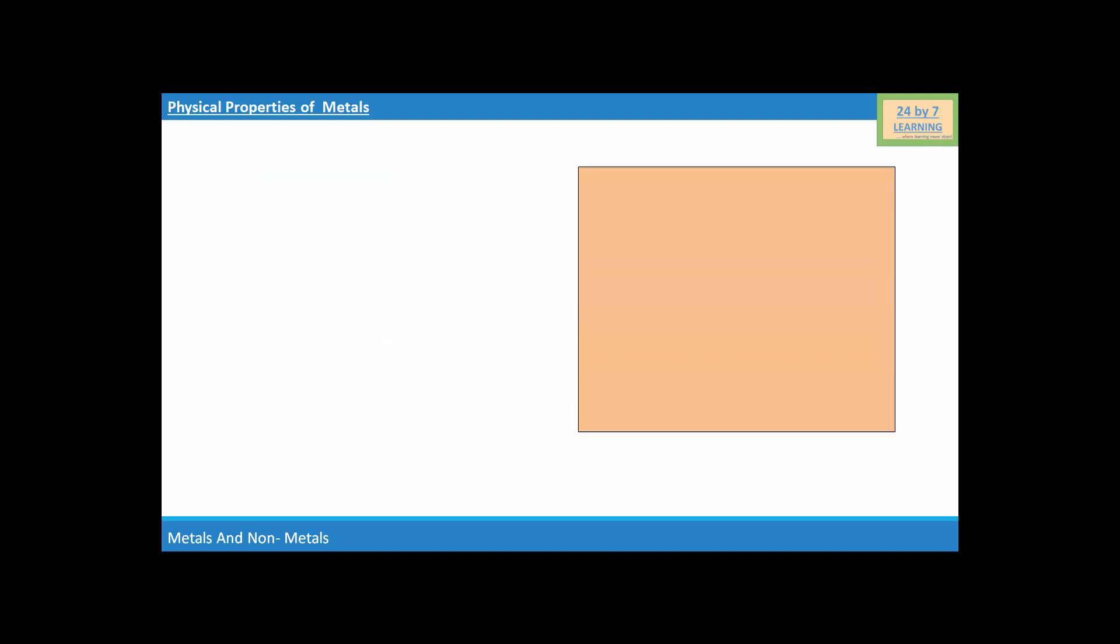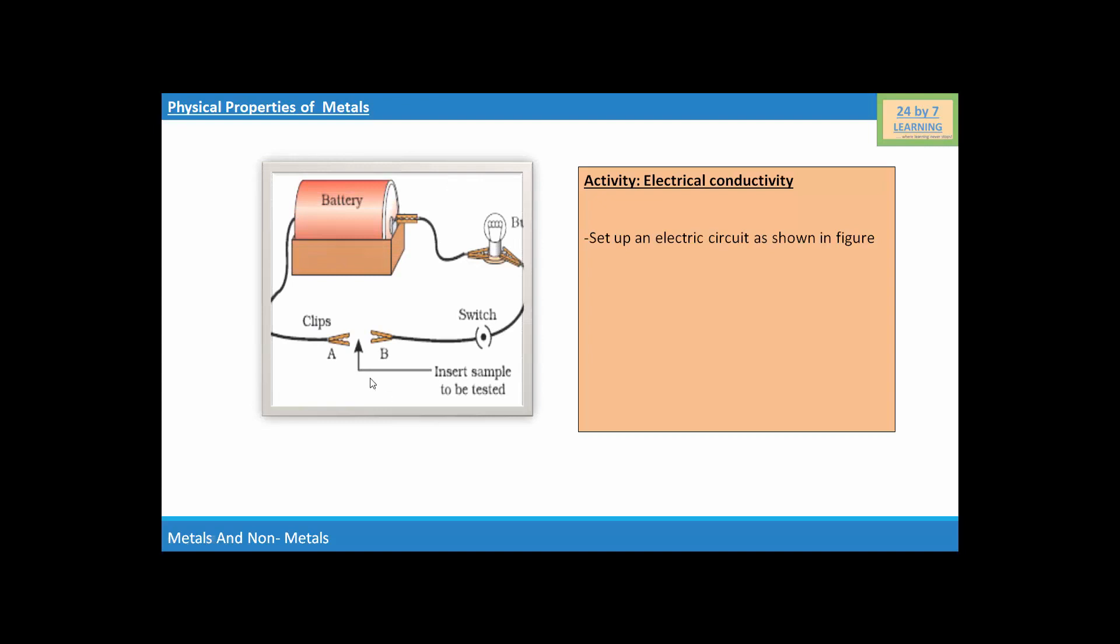Here is another activity showing electrical conductivity of metals. Set up an electrical circuit as shown in this figure. Place a metal to be tested in the circuit between terminals A and B. Does the bulb glow? And if, then what does this indicate?